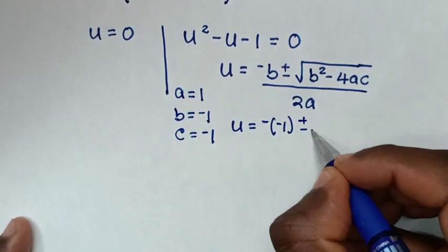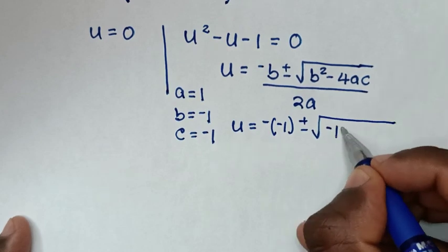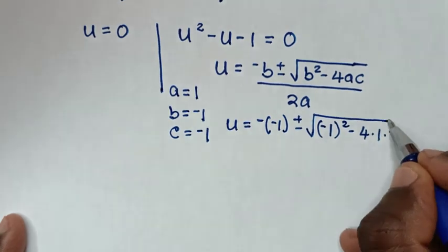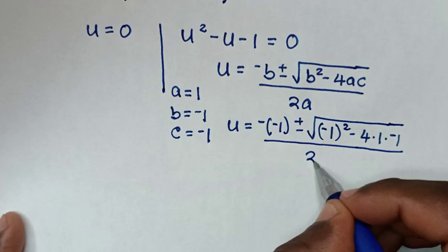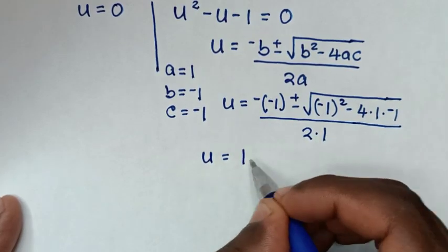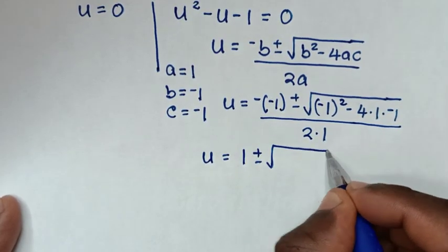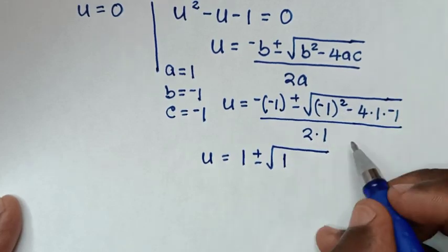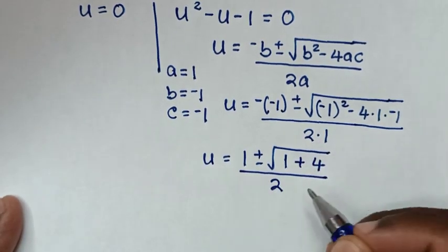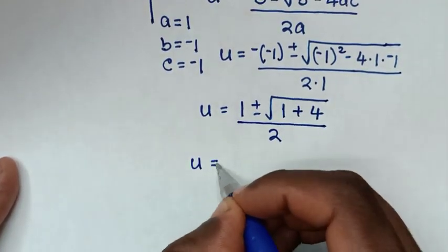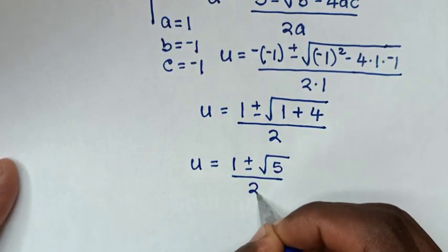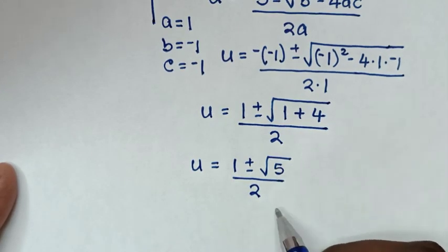And c is the constant, which is negative 1. Substituting: u equals negative of negative 1, plus or minus square root of negative 1 squared minus 4 times 1 times negative 1, over 2 times 1. That gives u equals 1 plus or minus square root of 1 plus 4, over 2, which is 1 plus or minus square root of 5, over 2.